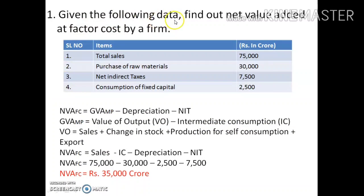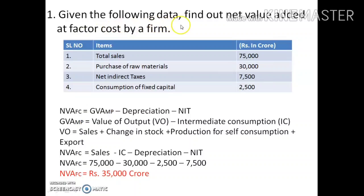Given the following data, find out net value added at factor cost by a firm. We have total sales, purchase of raw materials, net indirect taxes, and consumption of fixed capital. We have to find out net value added at factor cost. The formula is: NVAFC = GVAMP minus depreciation minus NIT, where NIT is net indirect taxes.